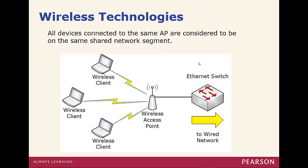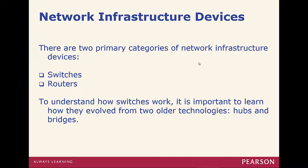Wireless technologies: wireless clients connect to a wireless access point, and that wireless access point will be hardwired to some type of switch so that we can actually communicate with the physical network. Network infrastructure devices could be routers, switches, or hubs, but the two main categories are routers and switches, and we need to understand how these things work.